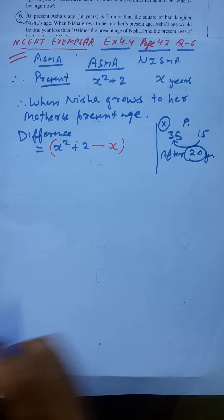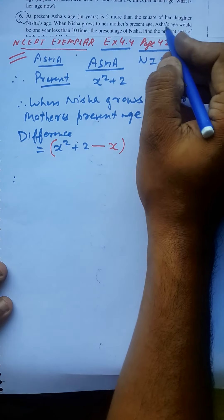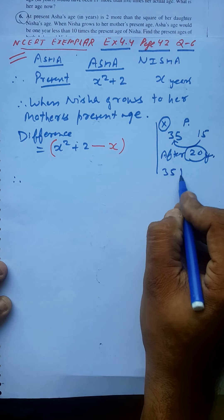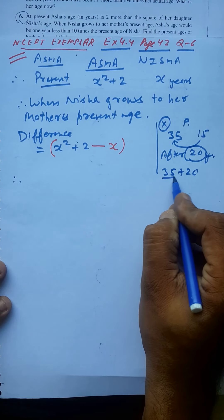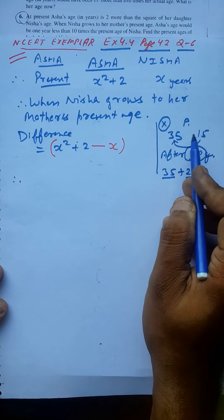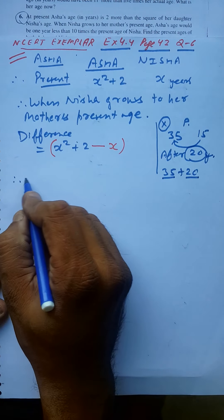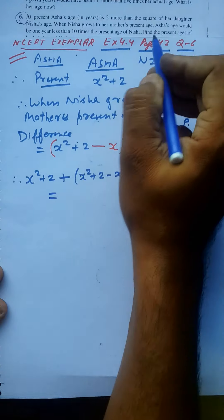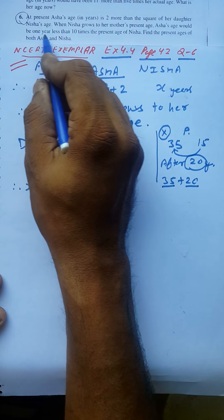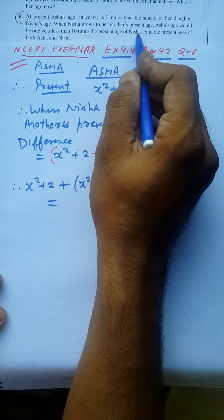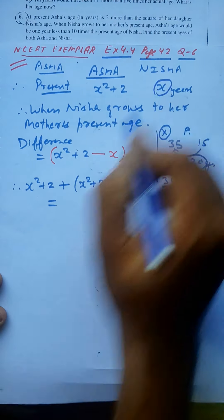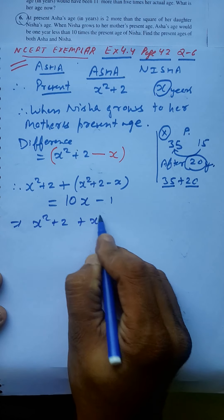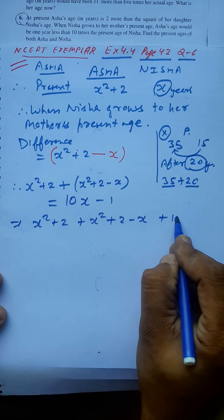When Nisha grows to her mother's present age, Asha's age would be her present age plus the difference. So Asha's age at that time is x squared plus 2, and we add (x squared plus 2 minus x) to it. Then her age would be 1 year less than 10 times the present age of Nisha. 10 times x minus 1. So we solve: x squared plus 2 plus x squared plus 2 minus x equals 10x minus 1.